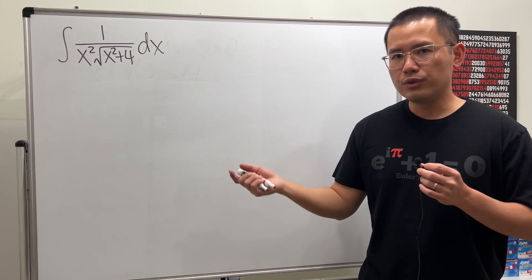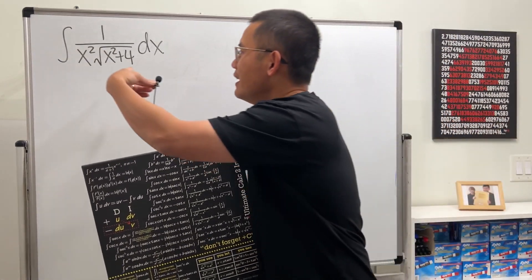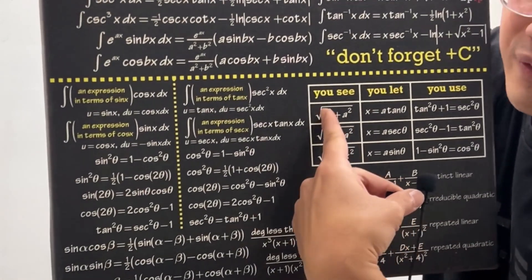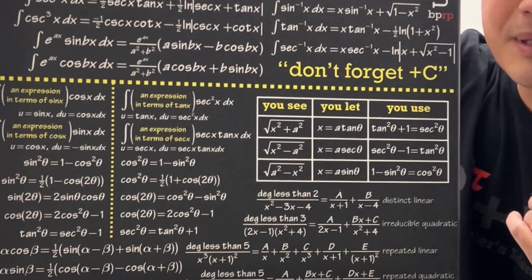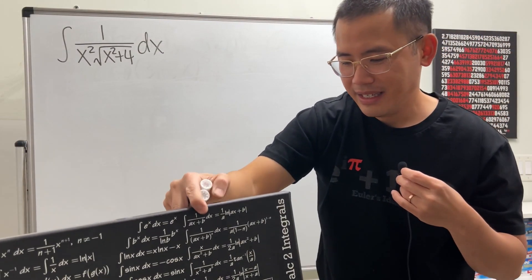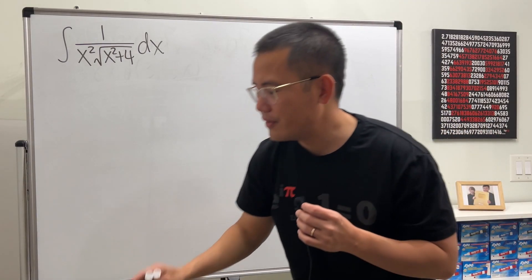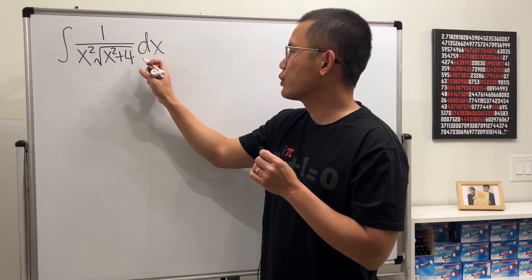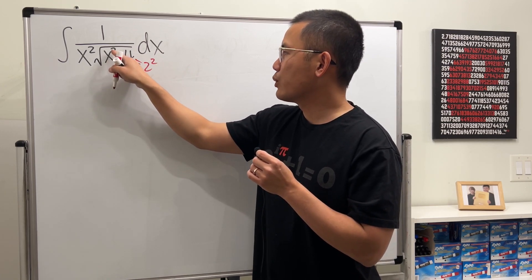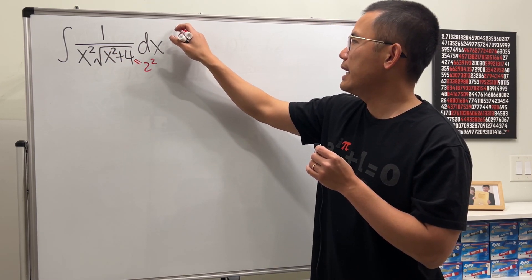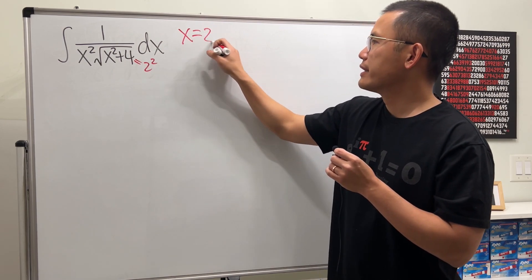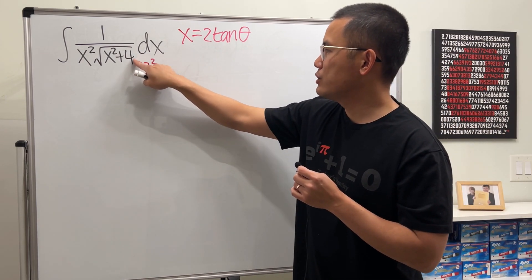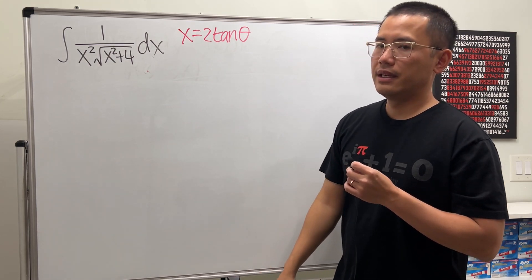First, get the notes. We have x squared plus 4; 4 is the same as 2 squared. So we have the square root of x squared plus a squared. I'm going to do a tangent substitution. Notice that 4 is the same as 2 squared, so we have x squared plus 2 squared inside the square root. I'm going to let x equal to 2 times tangent theta — tangent is the key here.